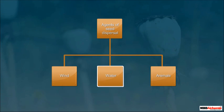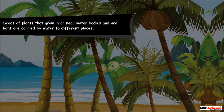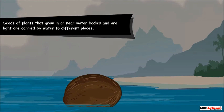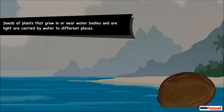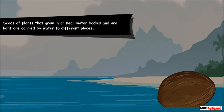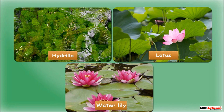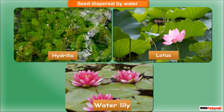Now let's see how water helps in seed dispersal. Seeds of plants that grow in or near water bodies, like that of coconut, float on water and are carried by water to different places. Other examples of seeds that are dispersed by water include the seeds of hydrilla, lotus and water lily.